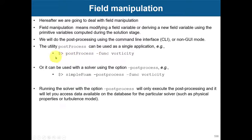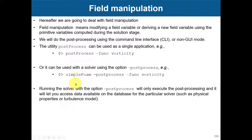We already saw that, but we're going to revisit it in more detail. Remember that we use the postProcess utility with the `-func` option and the function name. Here you can put `-list` to get the list of all available function objects. Some of these field quantities require you to use the name of the solver because you need to access the database library — information about the turbulence model, thermophysical properties, and so on.